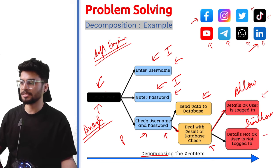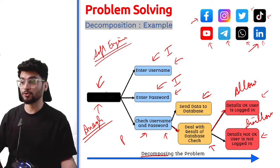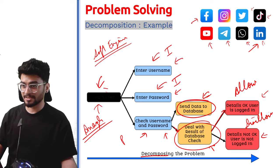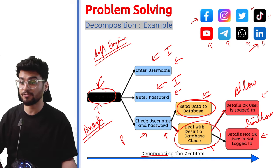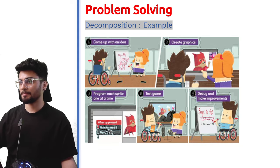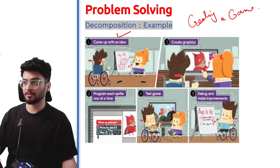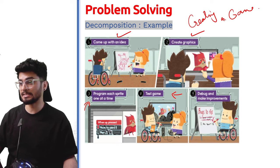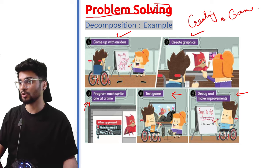It becomes easier to solve the bigger problem, and if any step has an error you know exactly where it happened. If you tried to solve the entire login problem in one go and there was an error, it would be very difficult to locate it. Another example is creating a game: come up with an idea, create graphics, code them one by one, test the game, then debug and make improvements — this is the entire process of problem solving using decomposition.